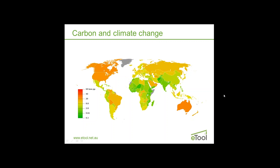This is a map of carbon emissions per person per year basis. We see places like Australia and America up around 20 tonnes per person per year. Europe's around about 10 to 15 tonnes per person. The developing countries are down at maybe 1 tonne per person per year. The global average at the moment is around about 7 tonnes per person per year.